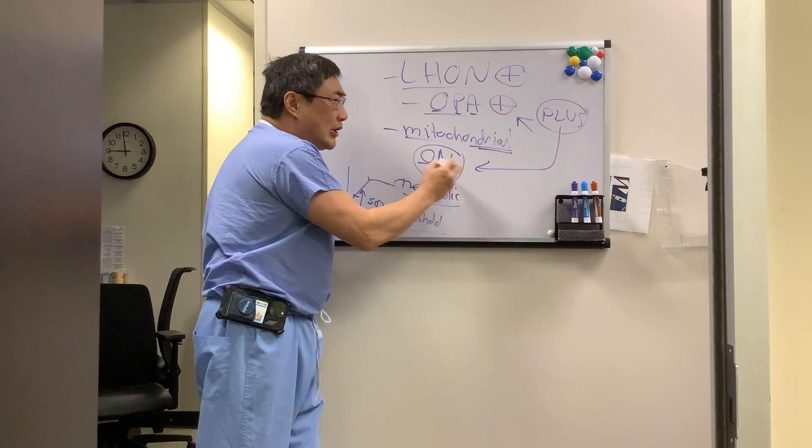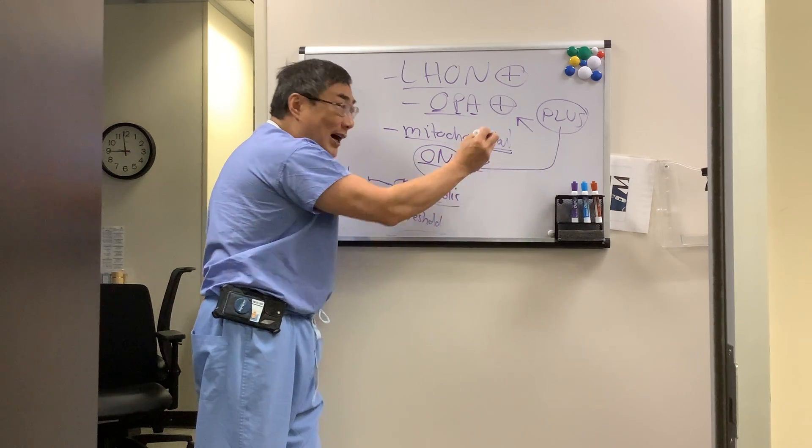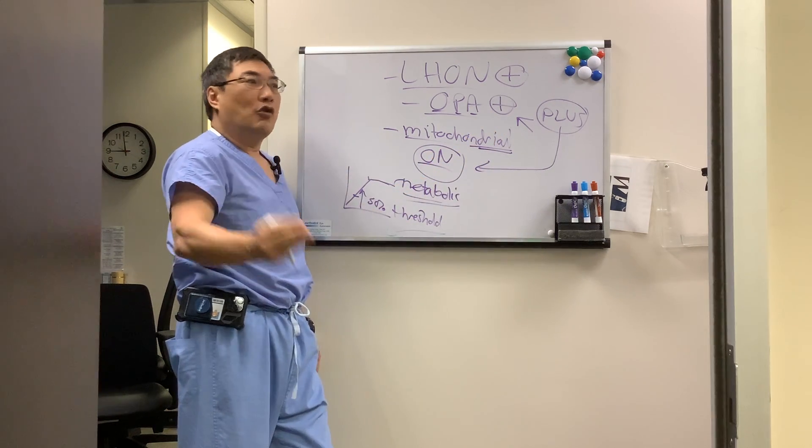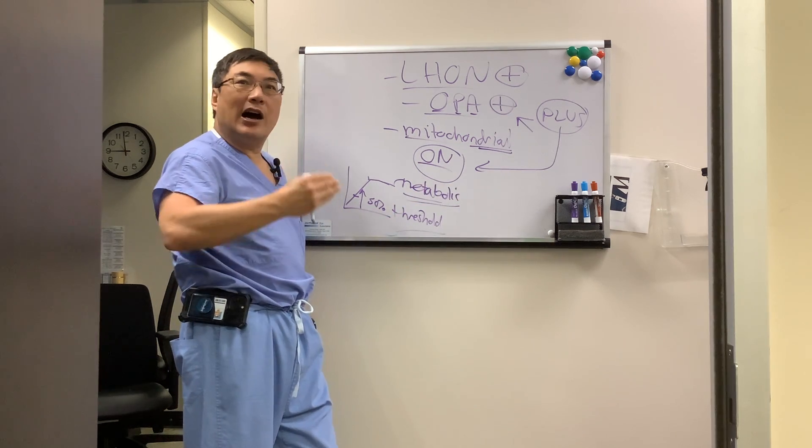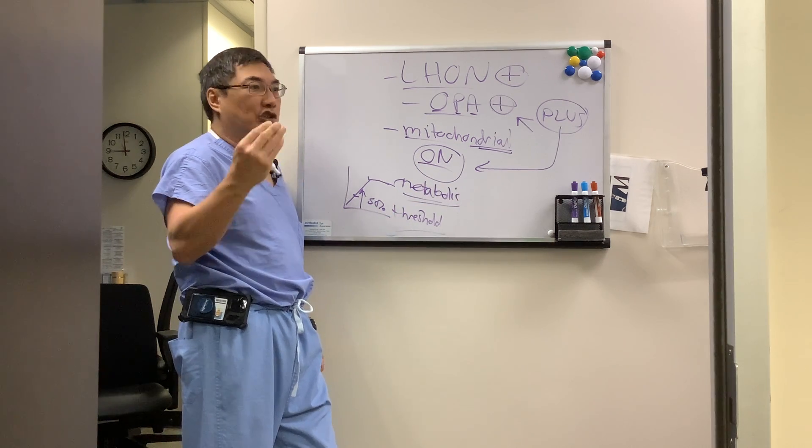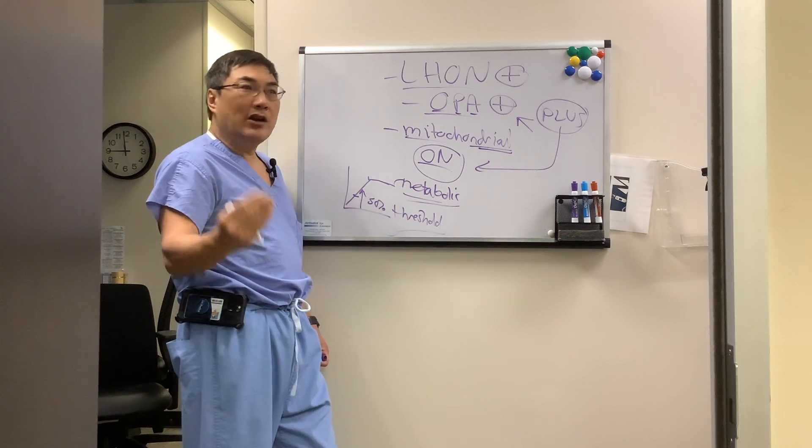Plus means you get optic neuropathy plus hearing loss, or plus some other mitochondrial failure in highly metabolically active tissue like your heart, kidney, or brain.